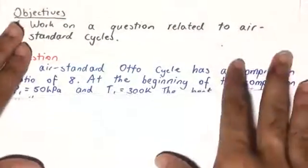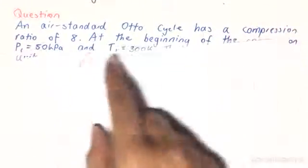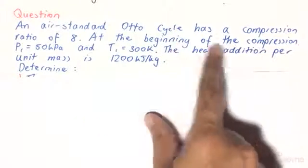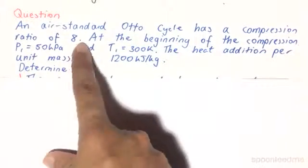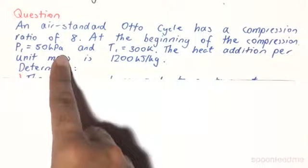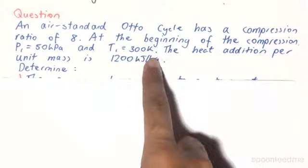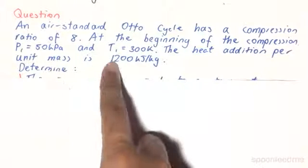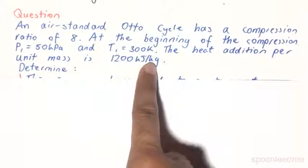So the question refers to the air standard Otto cycle, which has a compression ratio of 8. At the beginning of the compression, the pressure is 50 kilopascals and the temperature is 300 Kelvin. The heat addition per unit mass is 1,200 kJ per kilogram.